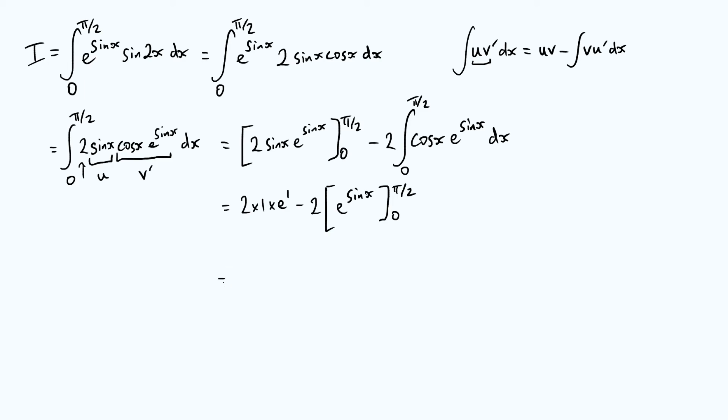So this first term that we already had, that is just 2e. And then we subtract off two times, well again, sine pi over two is one. So we get e to the one minus e to the zero, but e to the zero is one. So we get 2e minus 2e, and then minus here and a minus here. So they turn into a plus, and we get plus two times one. The 2es cancel, and it just turns out to be two. Pretty nice result there.